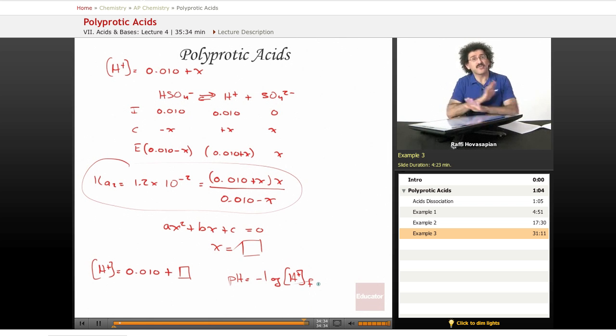For polyprotic acids, treat them like any other equilibrium. Most polyprotic acids are weak, and the first dissociation dominates. You can generally ignore the second, third, and fourth dissociations for weak acids.